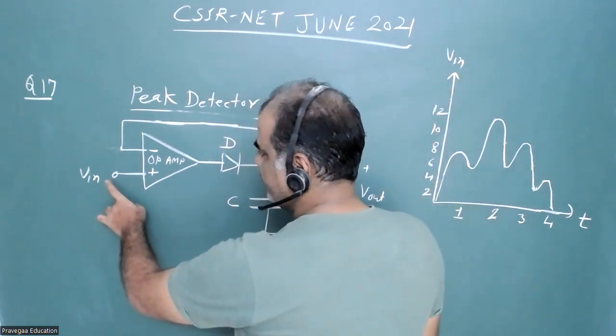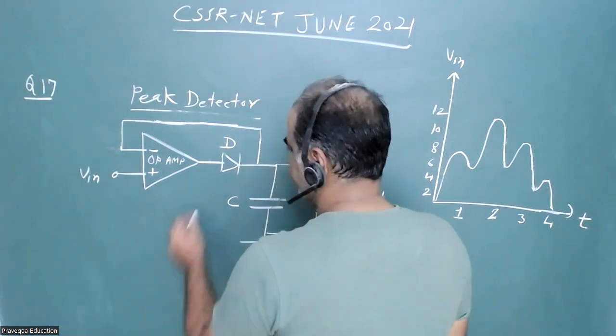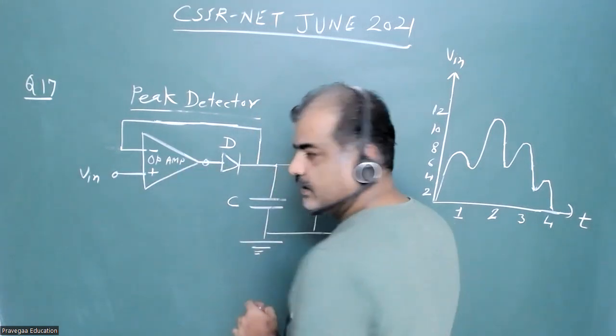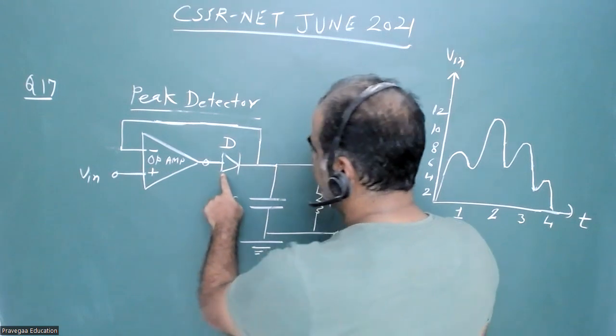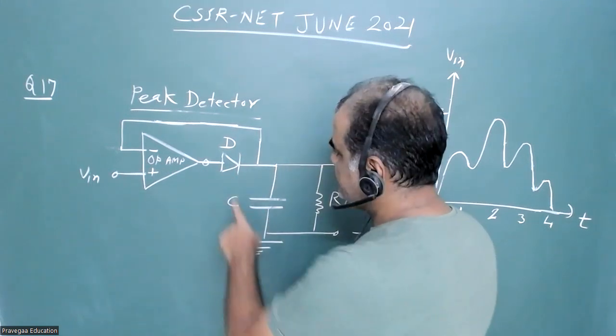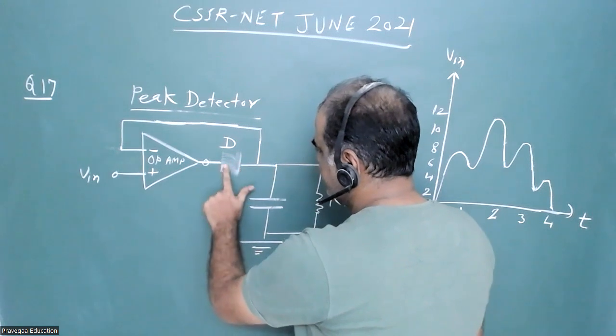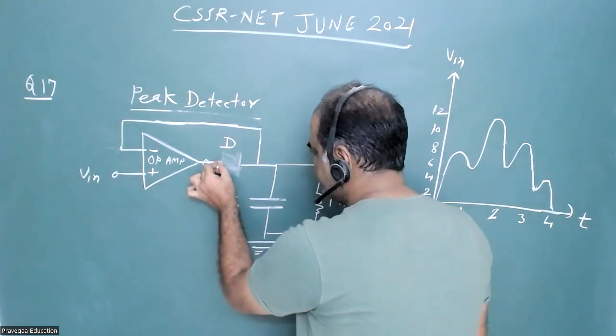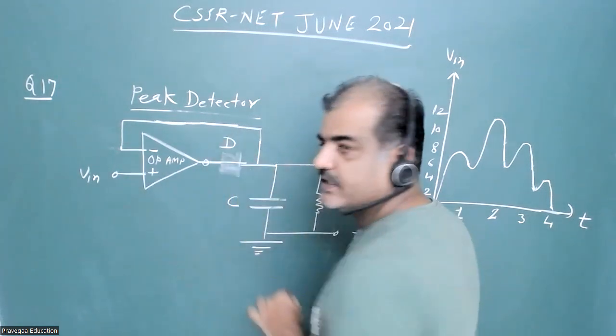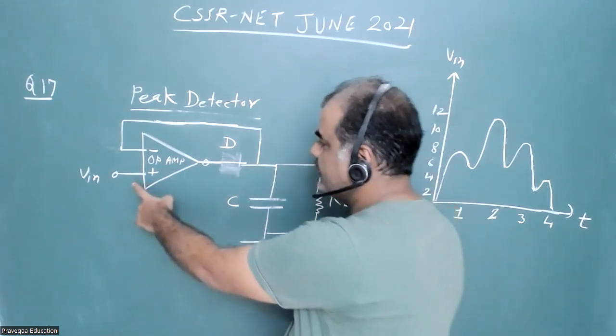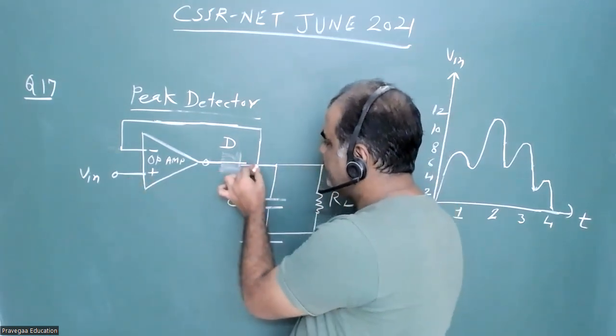When we apply positive value of V input here, we'll get positive input which will make this diode conducting. This diode will become forward biased. This will become now a voltage follower circuit, so whatever voltage you apply here, that voltage will appear here.